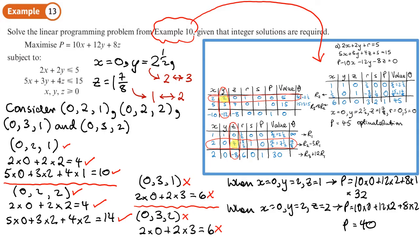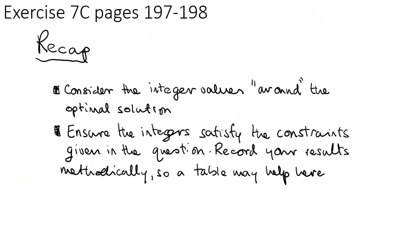So 40 is going to be the largest integer solution. The largest integer solution is P equals 40. You should now be able to do exercise 7C on pages 197 to 198.